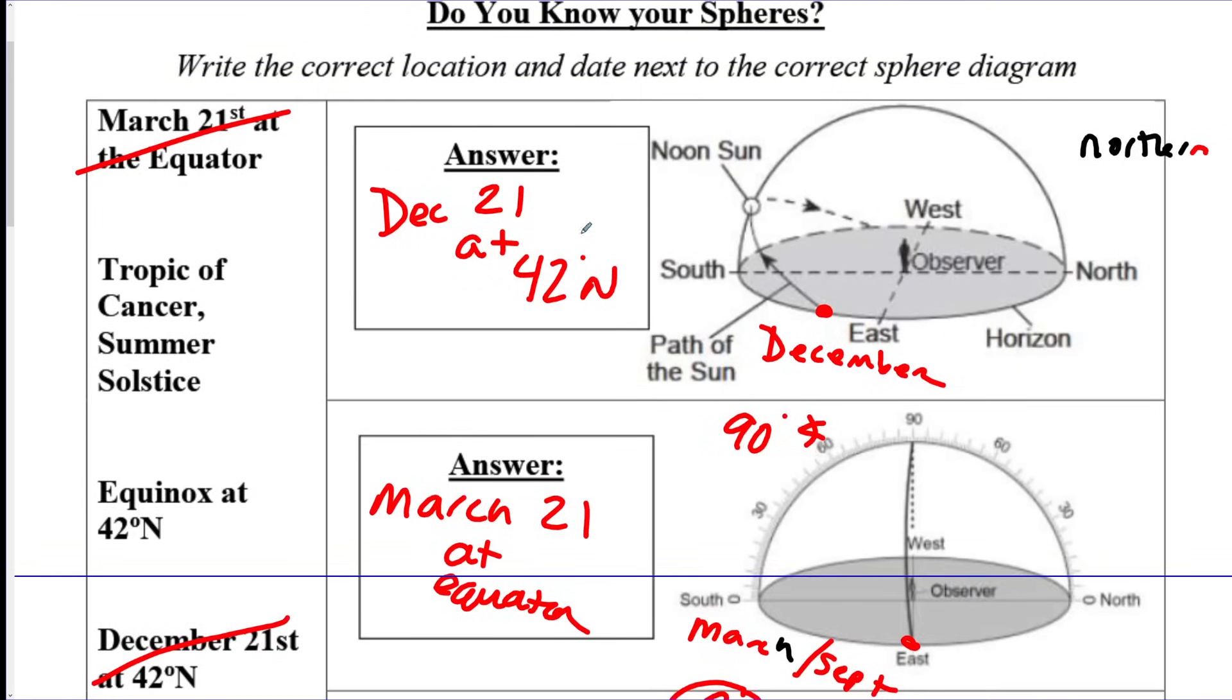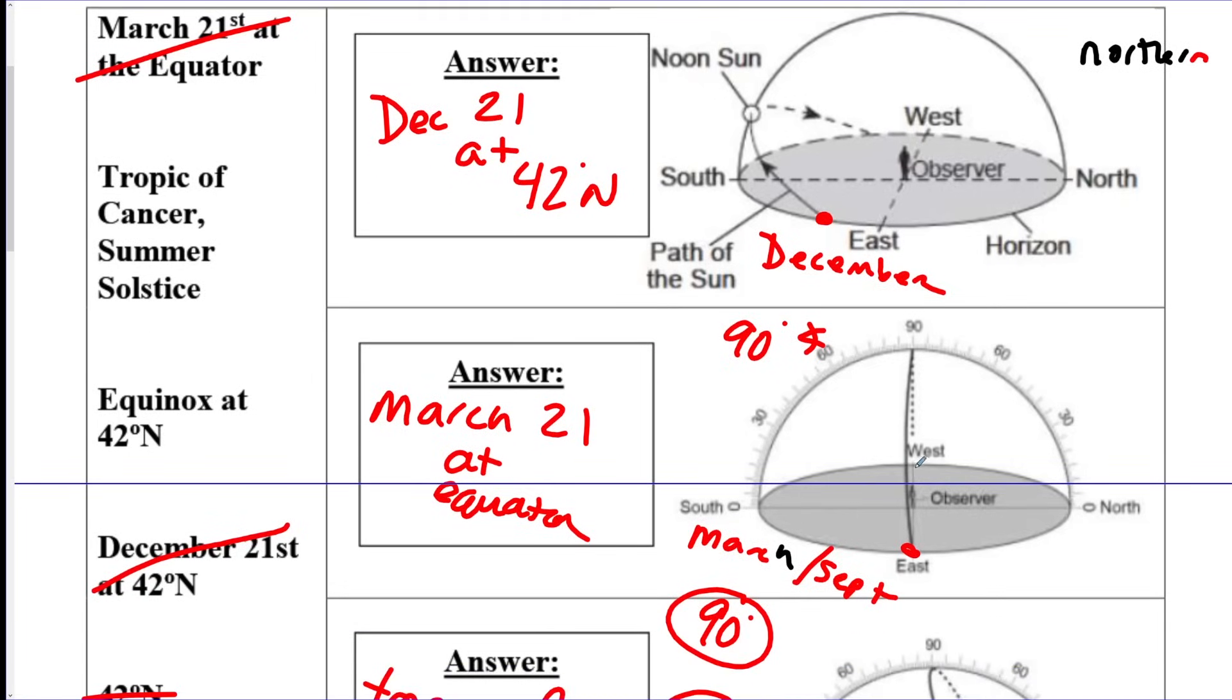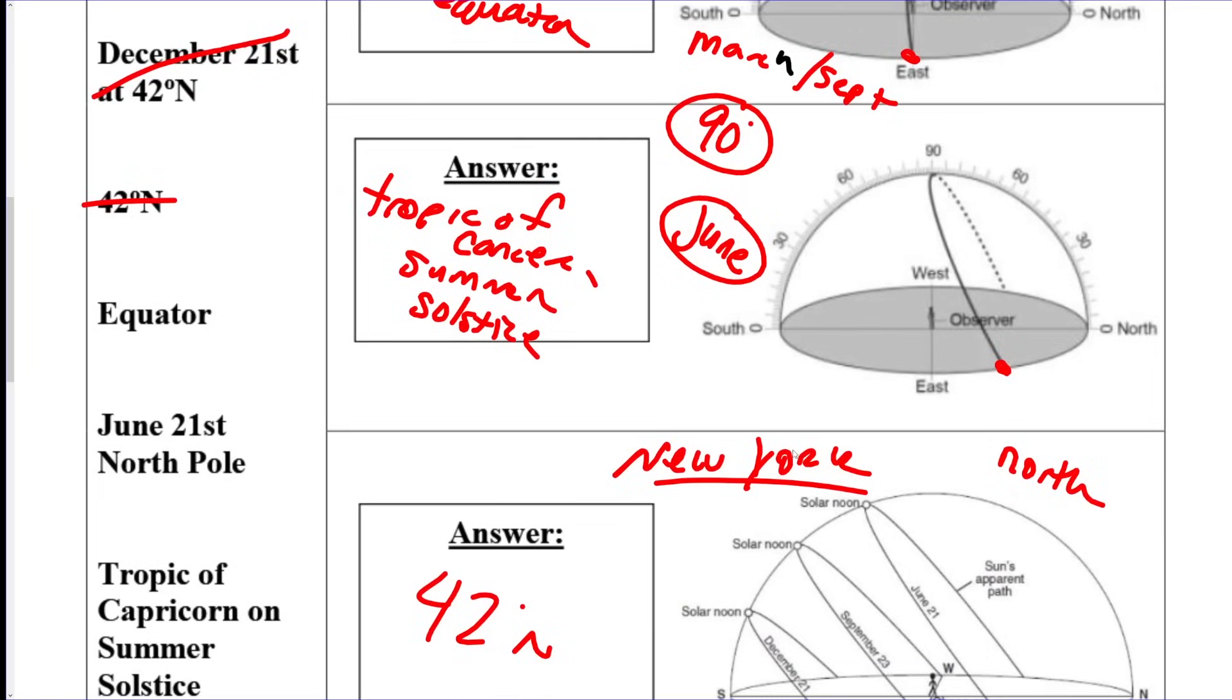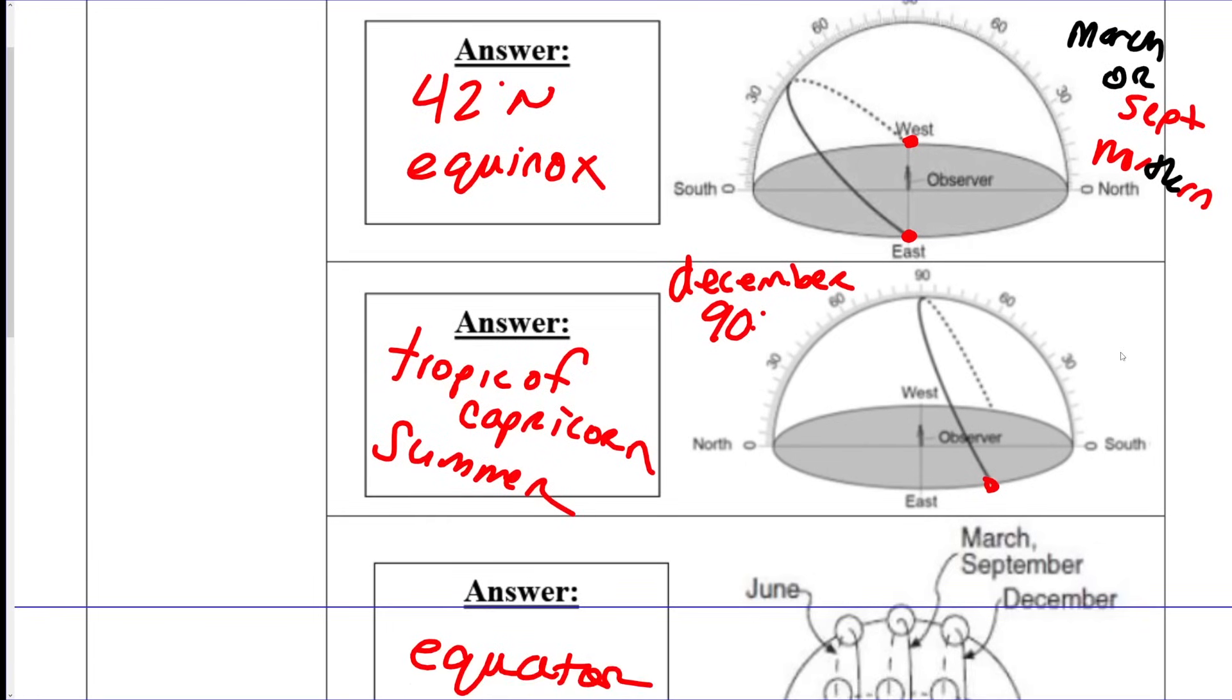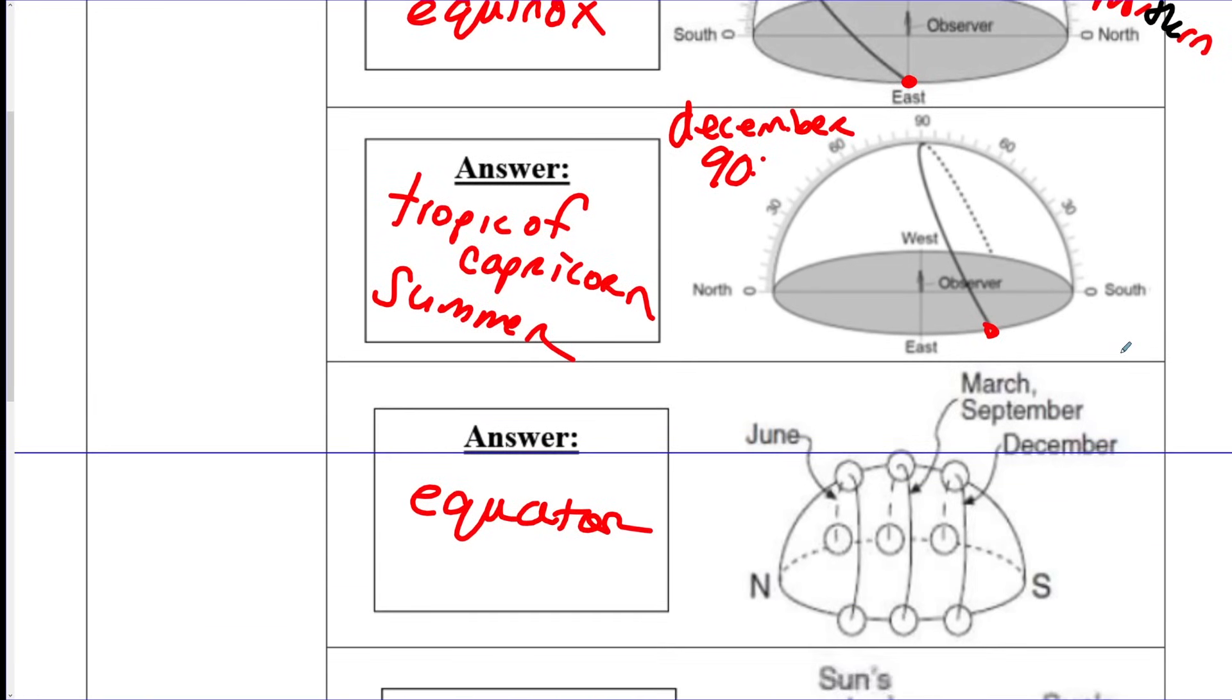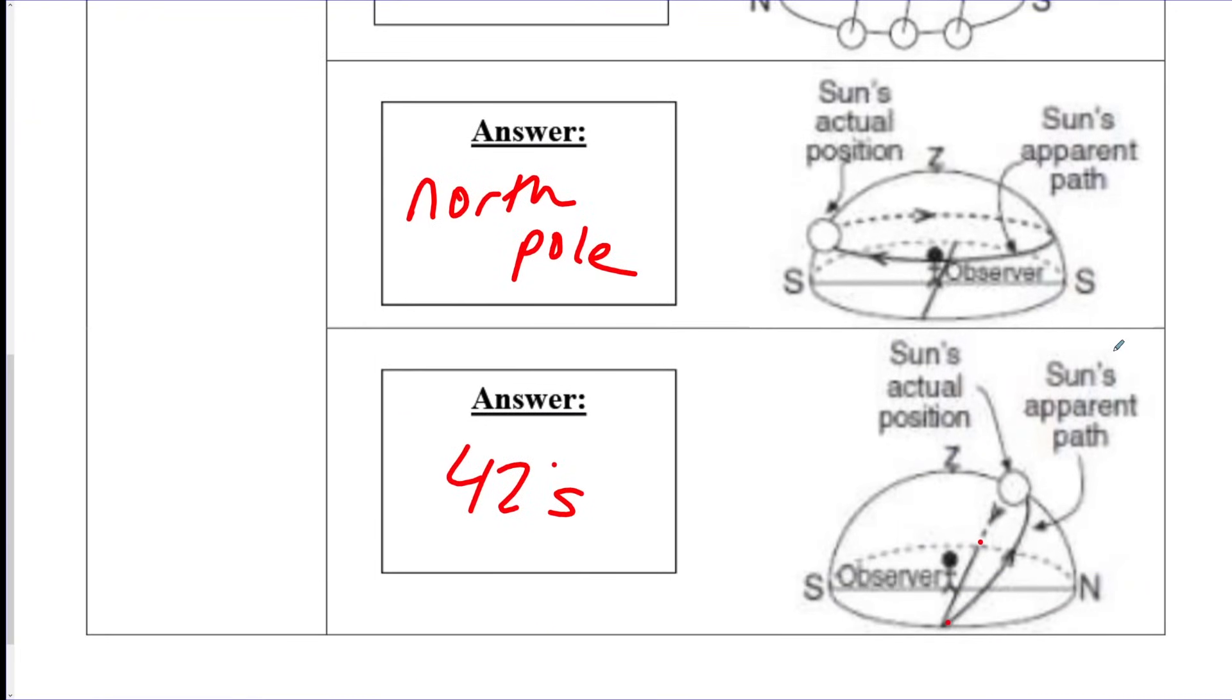And here I'm just going to scroll down so you could see my answer for the diagram on the right. I thought this might be helpful for you, just to see March 21st at the equator. I'm just going to scroll. You should definitely be familiar with these. Again, if you are lost on these, you should go watch my video on how these work.